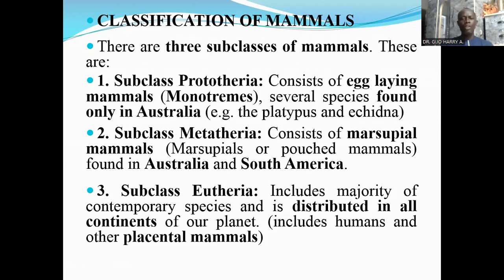We also have the subclass Eutheria, which includes the majority of contemporary species of mammals. These organisms are distributed in all continents of the Earth. They include humans and other placental mammals like the rats, goats, cats, lions, and antelopes. Virtually all — the majority of mammals — belong to this subclass Eutheria.